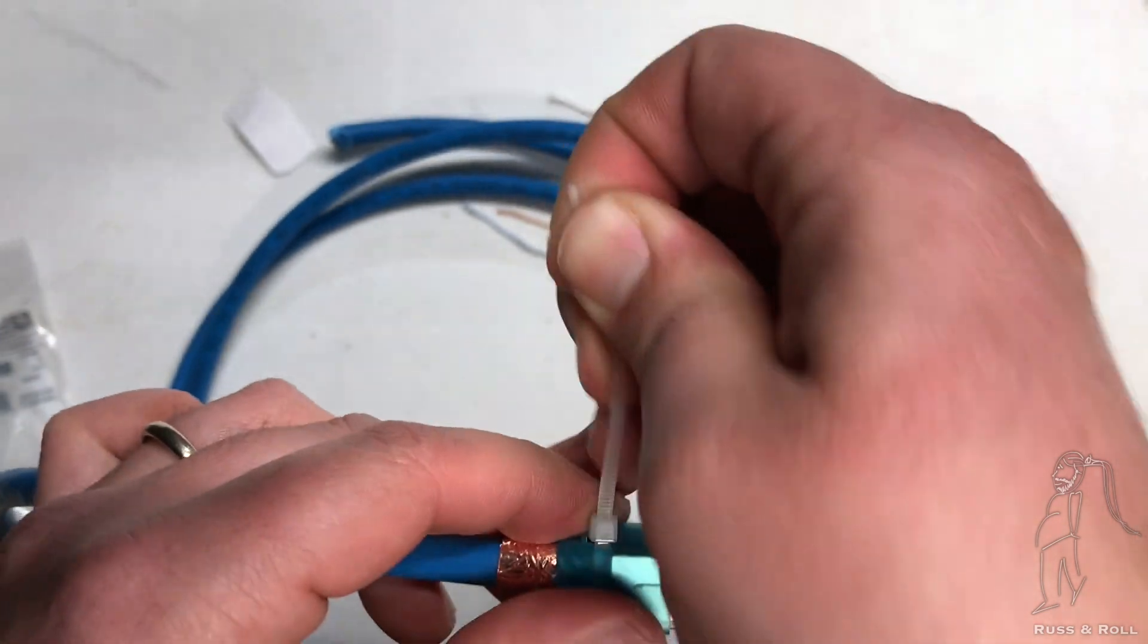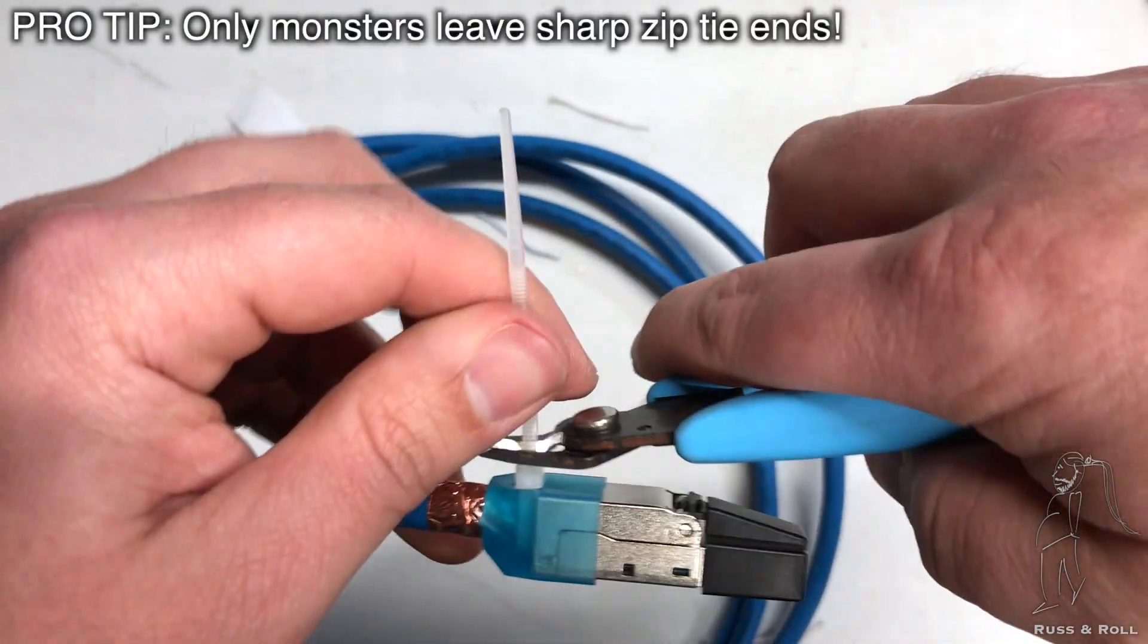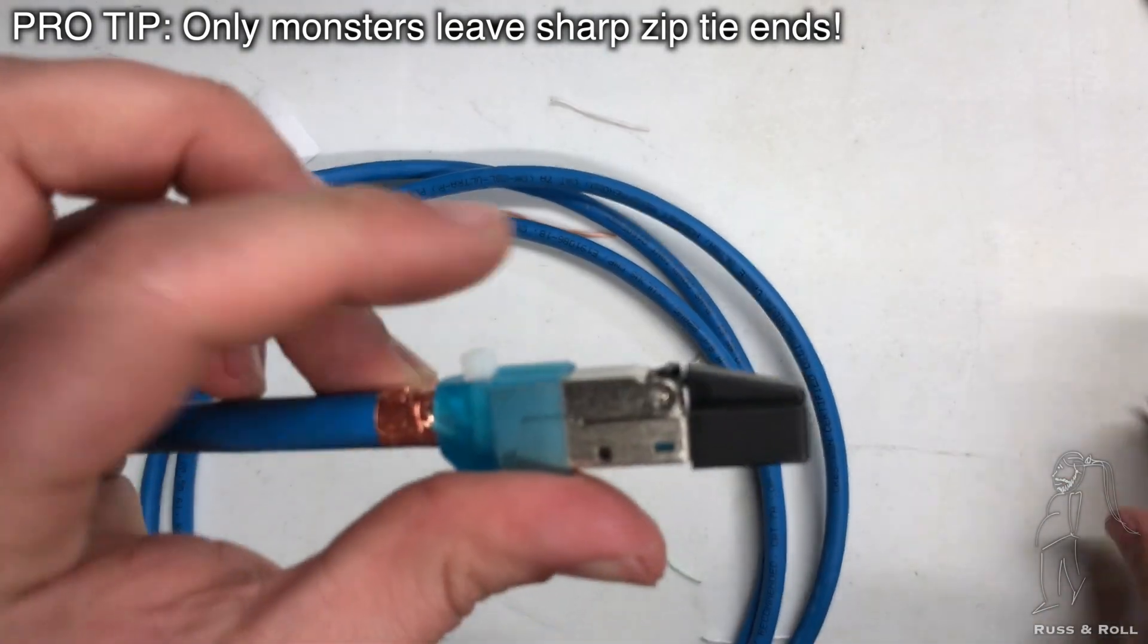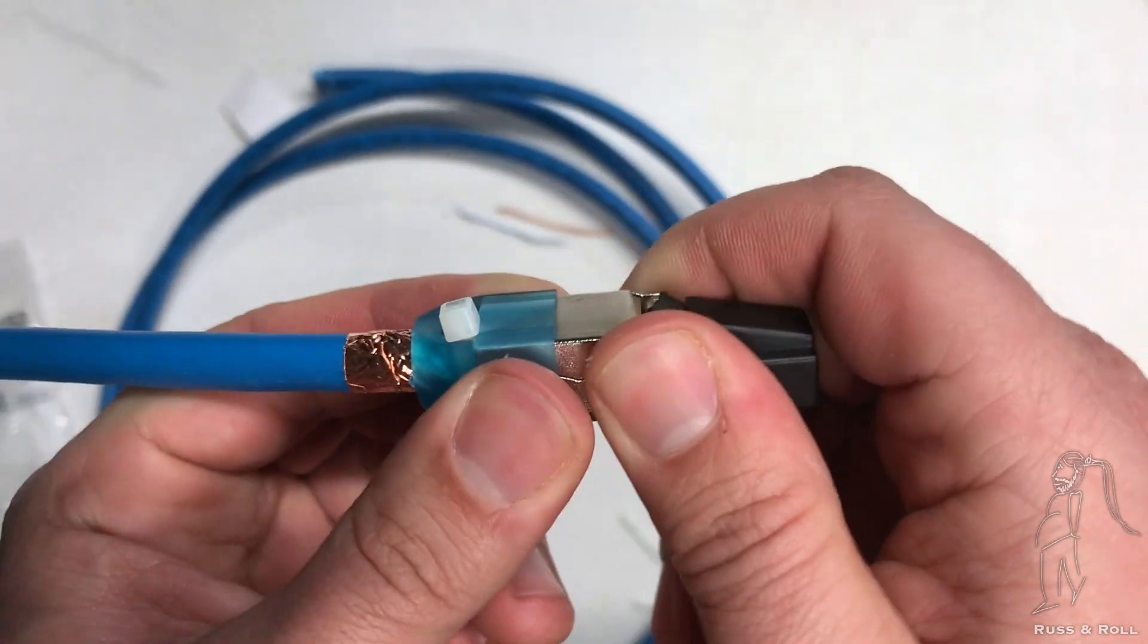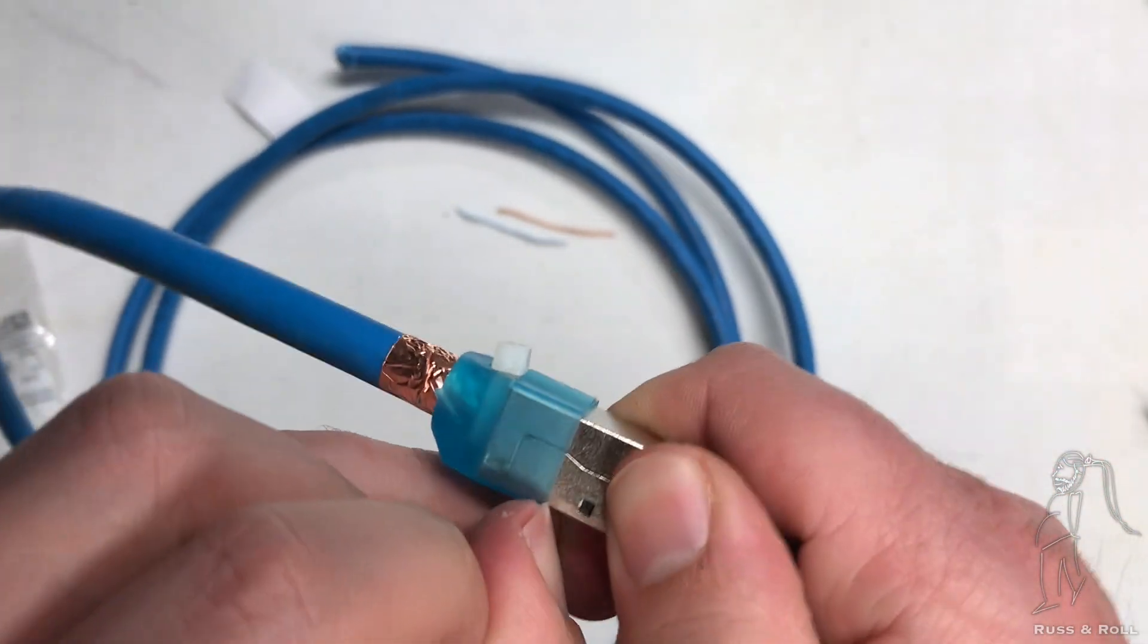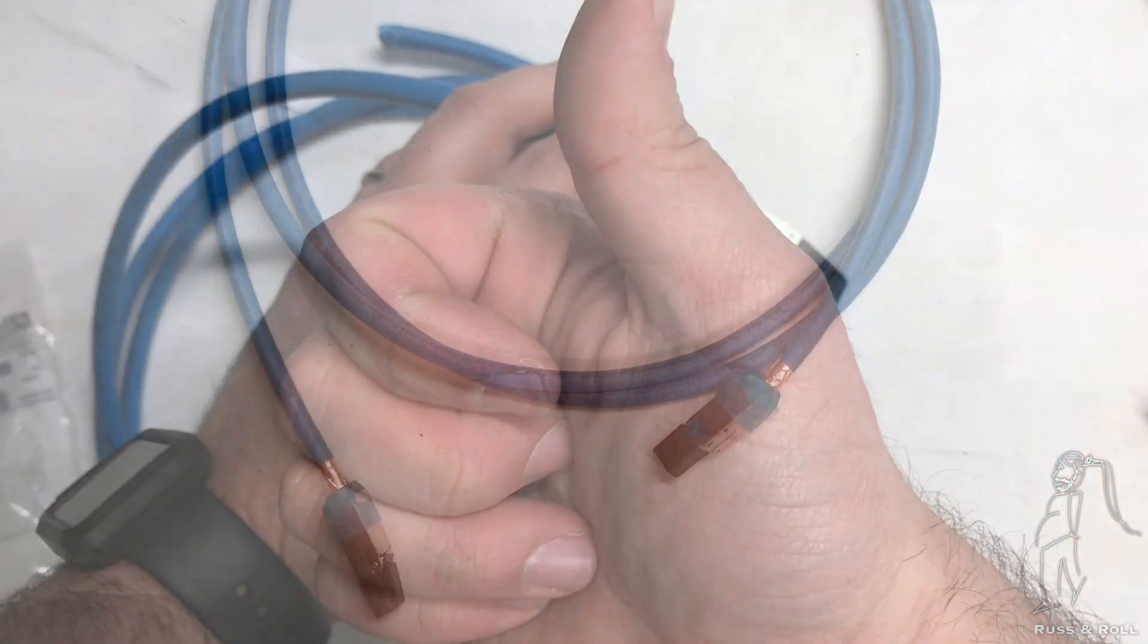And because we don't want to get sliced to pieces later, we're going to use our flush cutters to cut the zip tie flush without leaving any sharp edges. I've had people tell me that they don't use the boots because they can't get the boot to stay on the connector. But as you can see here, I'm pulling pretty hard and this boot's not going anywhere. If your boots are moving around, you haven't done something right, so you might want to check on that.